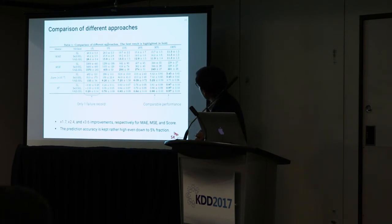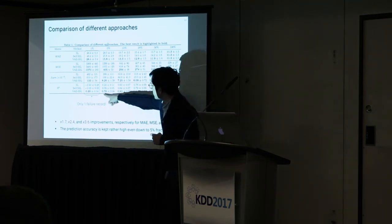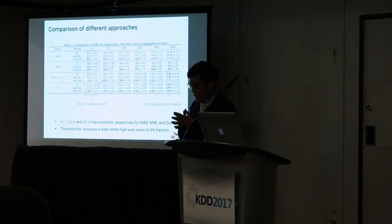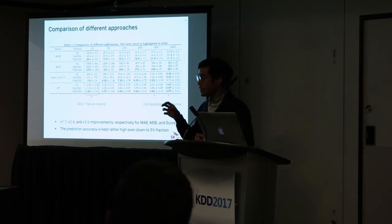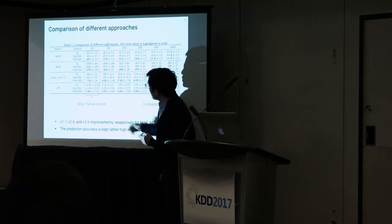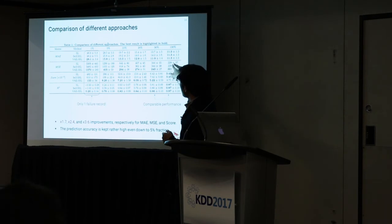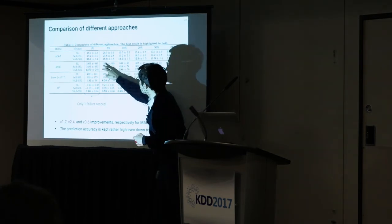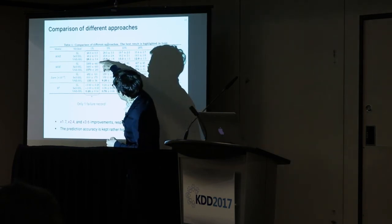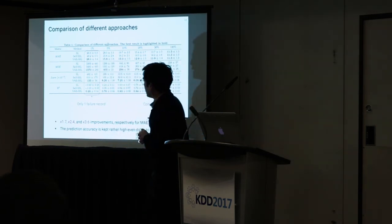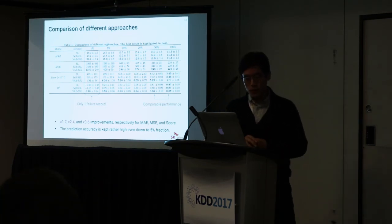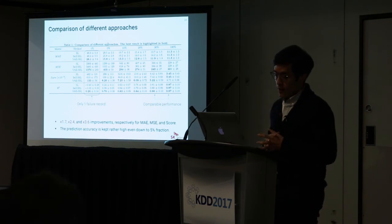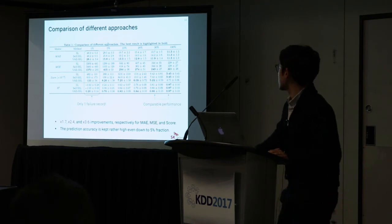At 1% labeled data — meaning only one known failure out of 100 units — our method already achieves good prediction power. Comparing supervised learning versus our semi-supervised method, there is a factor of 1.7 improvement in MAE, a factor of 2.4 in MSE, and a factor of 3.6 in the score metric. Prediction accuracy remains relatively high even down to 5% labeled fraction.